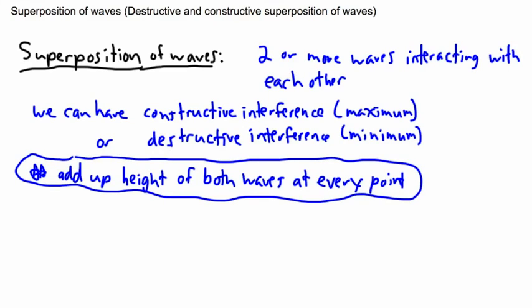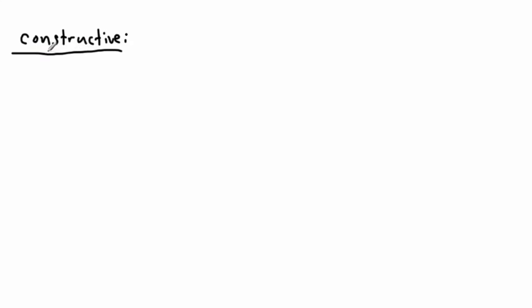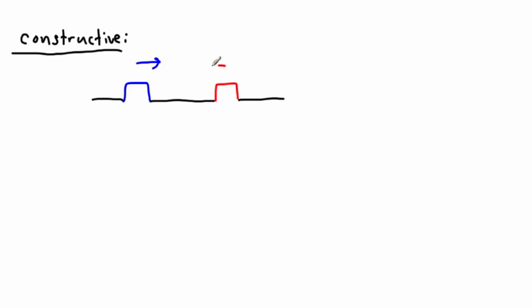Let's do an example of constructive interference. So here I'd like to show you some sort of wave — maybe I'll draw one in blue, like on a string. And then coming towards it, maybe I'll draw a red one. I'm meaning to draw these the same size. So there's a blue one going this way and a red one going this way — two waves on a string about to collide.